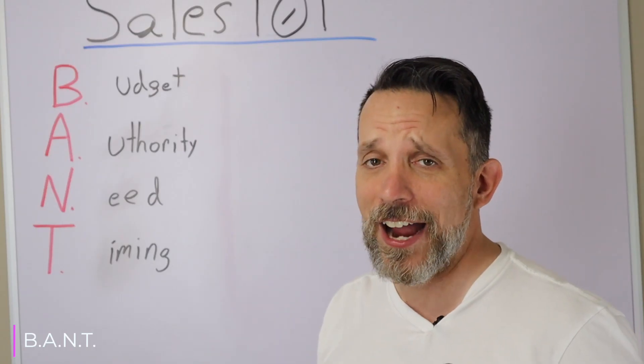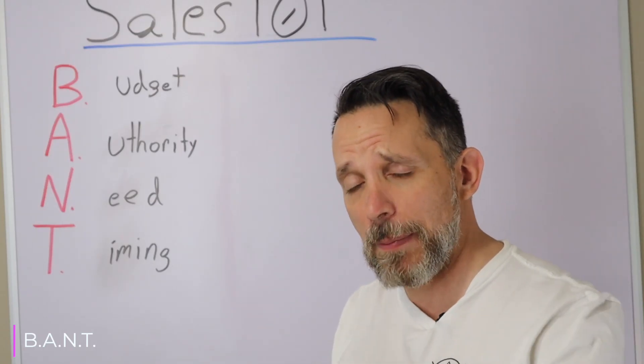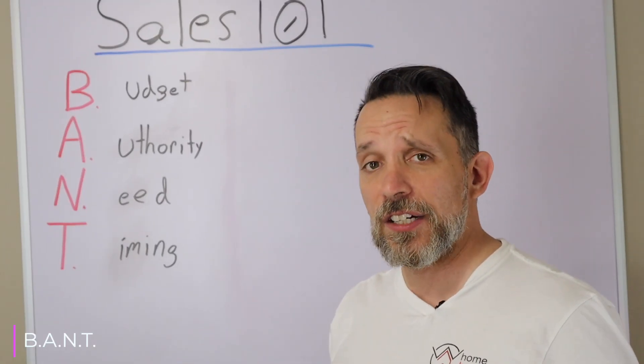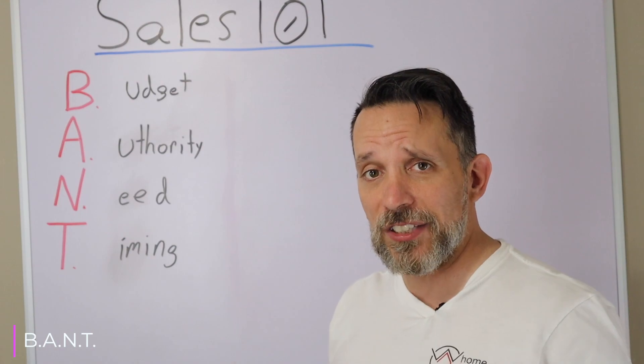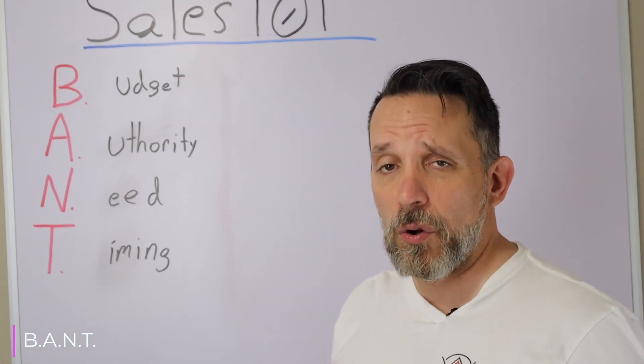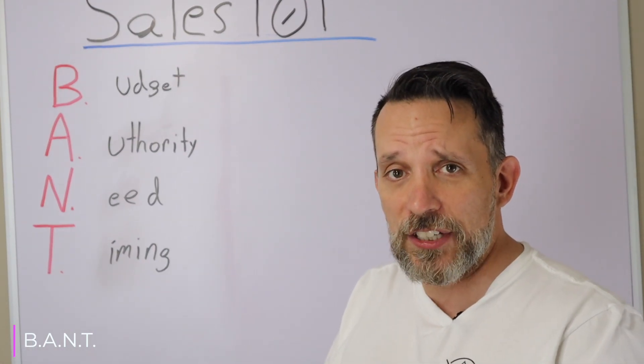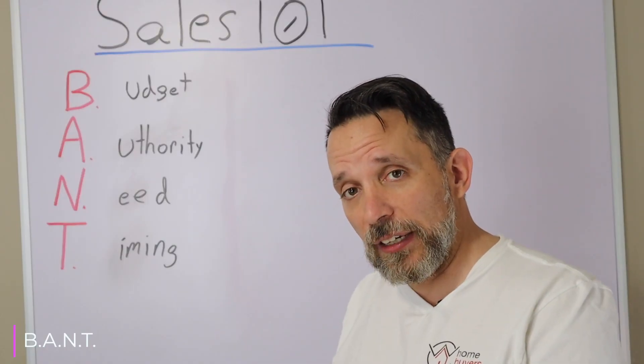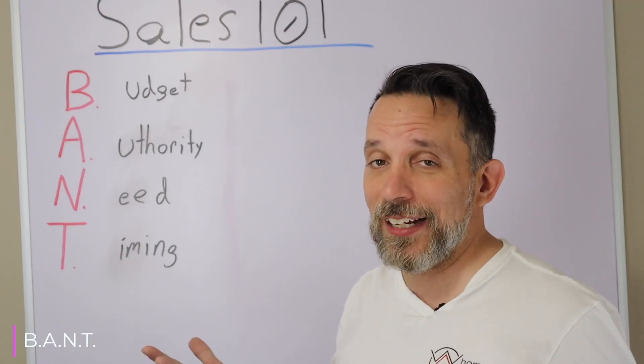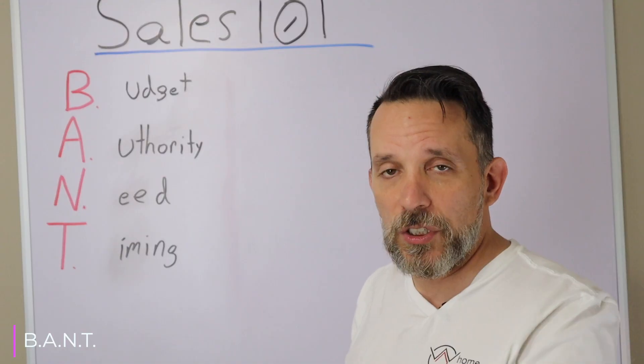Authority: who's on the deed, who needs to sign? Husband and wife, spouses — is it an estate file, is it inherited? Are all the people on the same page? Do you have the executor? Need: what's the need, why are you selling? And then Timing: when do you want to move, when do you want to sell?